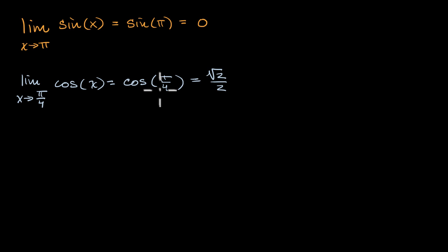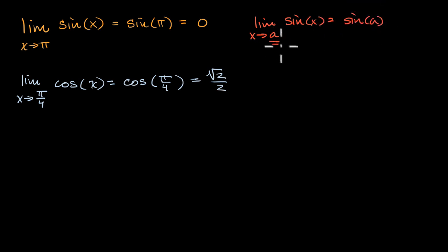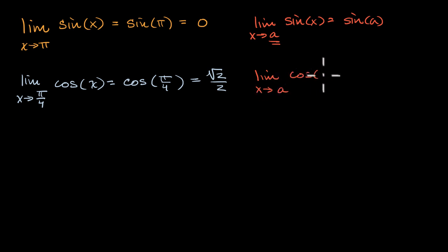In general, if I'm dealing with sine or cosine, the limit as x approaches a of sine of x is equal to sine of a. This is going to be true for any real number a. Similarly, the limit as x approaches a of cosine of x is equal to cosine of a.